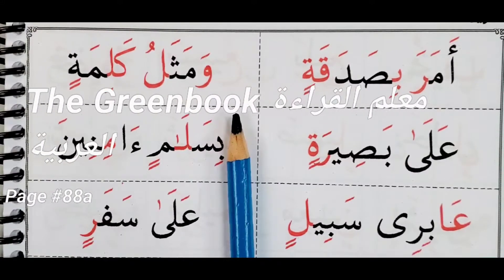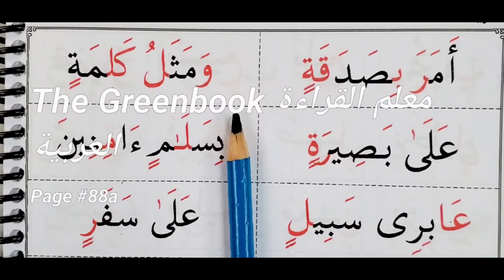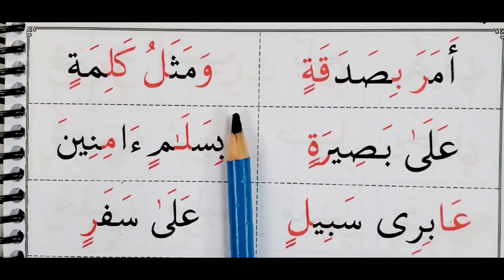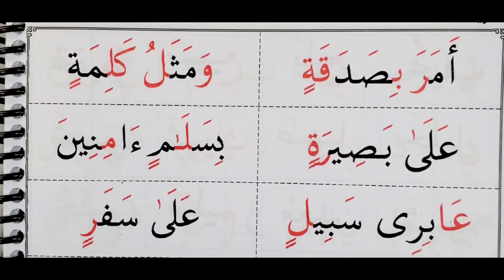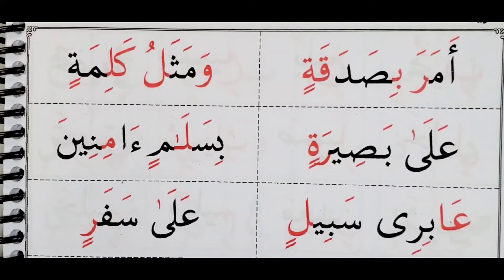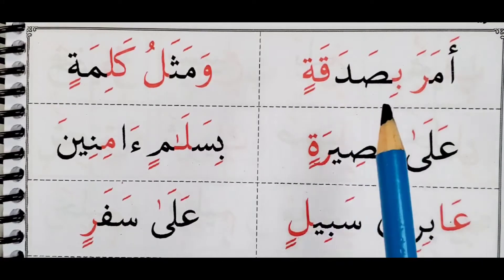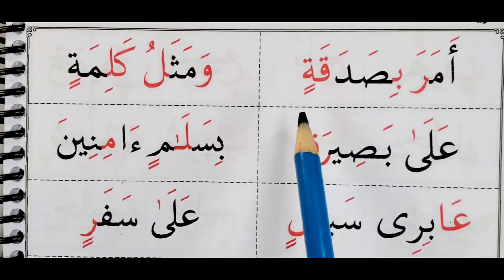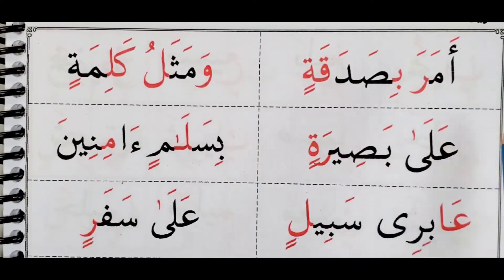Bismillahirrahmanirrahim, Assalamualaikum warahmatullahi wabarakatuh. Welcome again to our page. Today we are on page 88, the first part. Let's get started. So tamrinatun ala tanween al-maksoor — we are still doing practices on tanween. Tanween we said is the fathataini, kasrataini, and dhummataini.